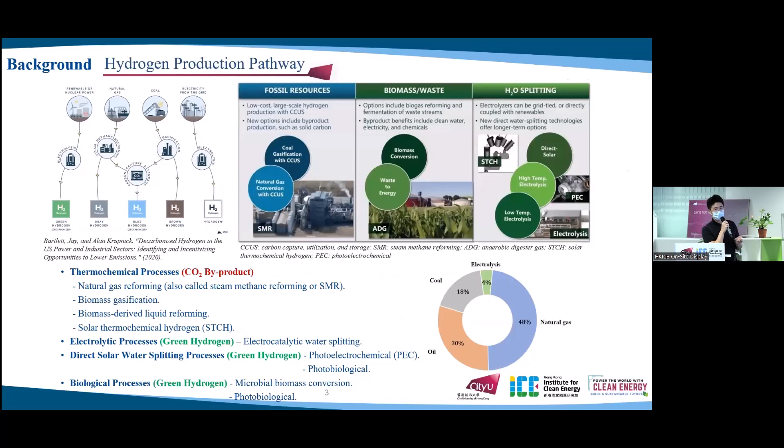Hydrogen could be produced from several different processes, which could be classified as thermochemical process, electrolytic process, direct solar water splitting process, and biological process. Currently, more than 95% of hydrogen is produced from thermochemical process. This process often accompanies carbon dioxide as a by-product, so this approach is incompatible with our vision to reduce environmental pollution. The other processes are still in their development stages because of sluggish kinetics and high costs. Therefore, how to achieve high efficiency, large scale, and low cost green hydrogen production is an important and urgent research topic for scientists.